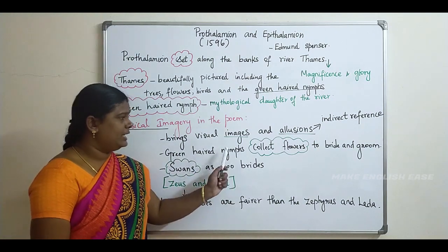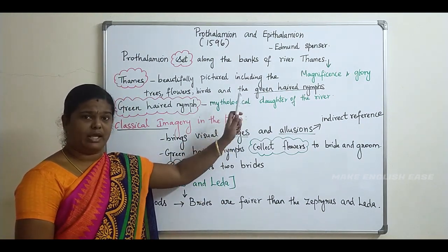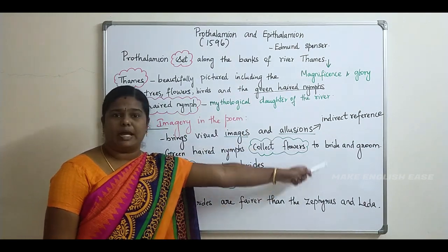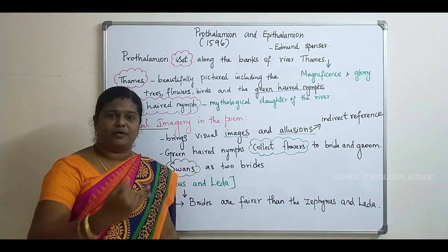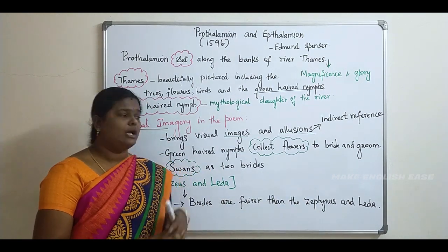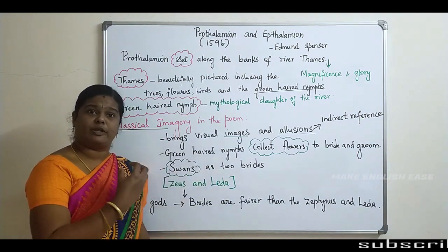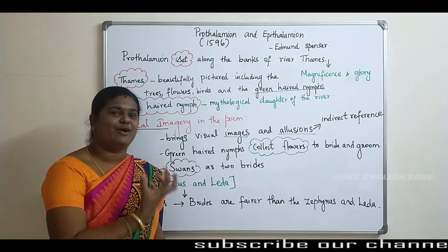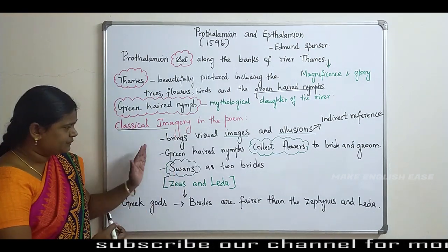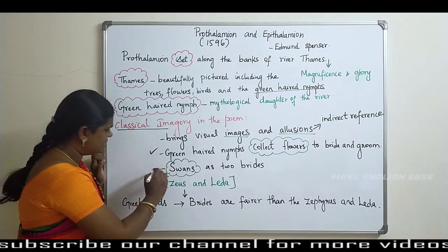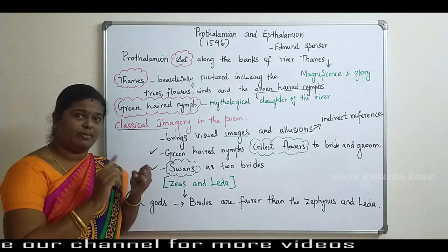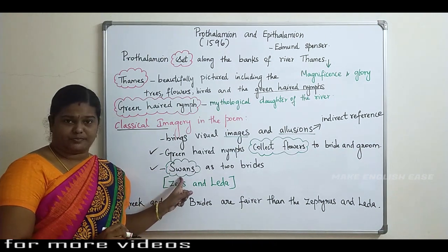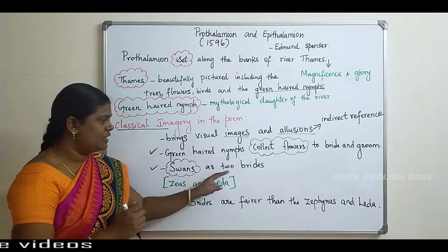The green-headed nymphs are the daughters of the river. What they do is collect flowers for the bride and groom. These flowers and swans represent the bride and groom. Two swans are the two brides.